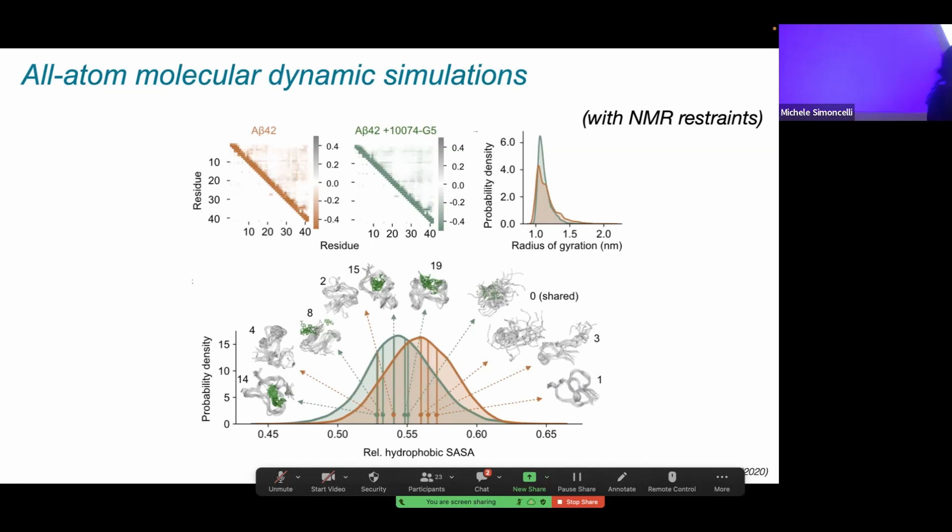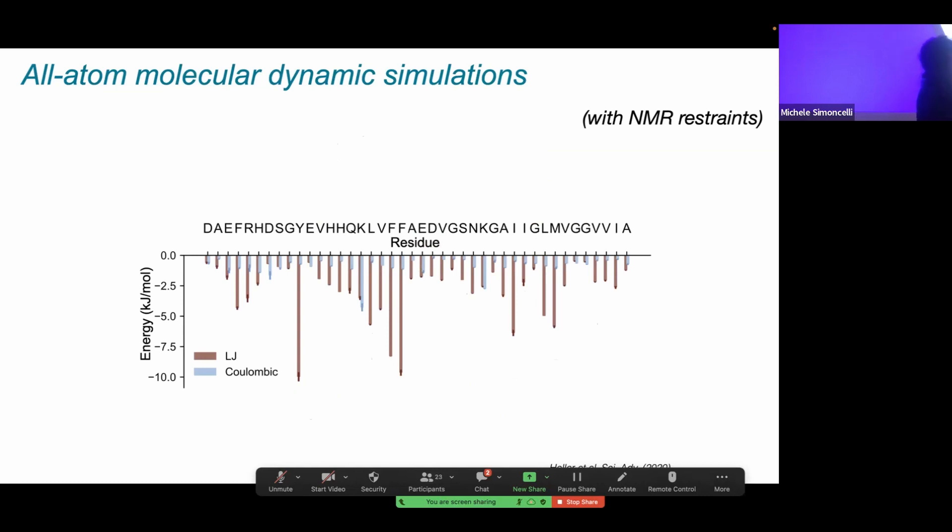If we also look at the distributions of the radii of gyration, again, we see that these distributions don't change very dramatically in the presence and absence of the small molecule. However, if we look at the relative hydrophobic solvent accessible surface area, there is where we start to see some changes. In the presence of the small molecule, the disordered peptide seems to be adopting conformations that are less hydrophobic. This may explain why we see this decreased aggregation propensity in the presence of the small molecule. We can also look at interactions at a residue-by-residue basis in terms of Lennard-Jones and Coulombic interaction energies. What we can see right off the bat is that all of these residues in some way are involved in the interaction with strong interactions in terms of aromatic residues, and it's predominated by Lennard-Jones interactions, but charge-charge interactions are also favorable.